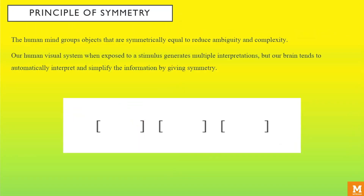Lastly, moving towards the principle of symmetry. This principle asserts that we group objects that are symmetrically equal to reduce ambiguity and complexity. Our human visual system, when exposed to a stimulus, generates multiple interpretations. But our brain tends to automatically interpret and simplify the information by giving it symmetry. For example, in the design given below, we are likely to perceive it as a set of three opening and closing brackets. Thus, symmetrical balance overpowers the proximity principle.